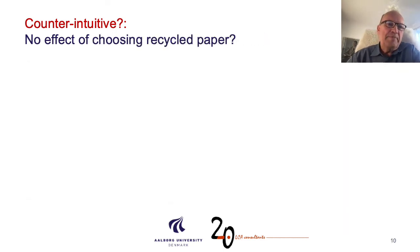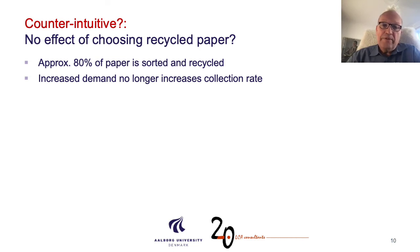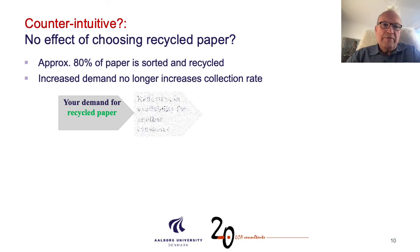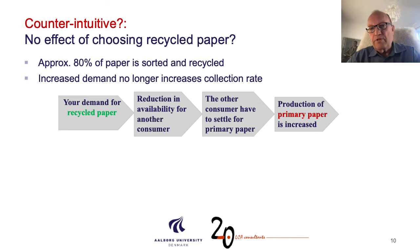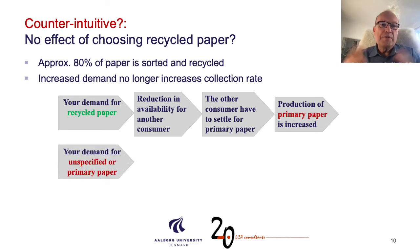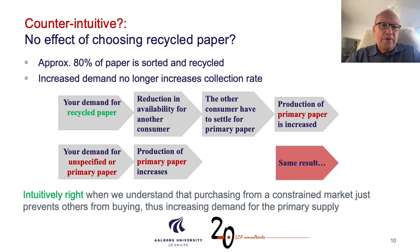What about recycled paper — isn't that a good idea to ask for recycled paper? Well, approximately 80% of paper is sorted and recycled. Increased demand no longer increases the collection rate. So your demand for recycled paper just means there will be no more available for another consumer. The other consumer then has to settle for primary paper, and the production of primary paper is increased. The demand for unspecified or even for primary paper just leads to more production of primary paper — again, the same result. This becomes intuitively right when we understand that purchasing from a constrained market prevents others from buying, thus increasing demand for the primary supply.